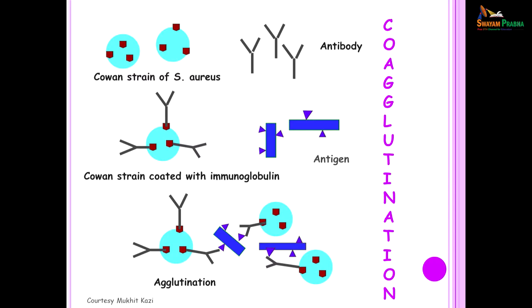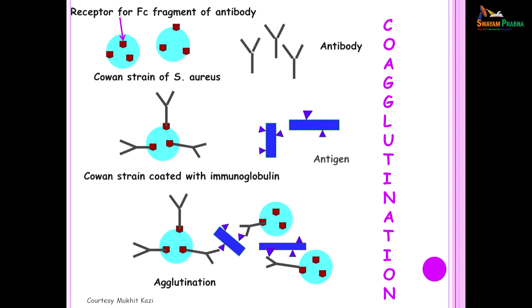Coagglutination is another form of reverse passive agglutination. Here we use the Cowan 1 strain of Staphylococcus aureus, which has a receptor for the Fc fragment of antibodies. When an antibody is mixed with the Cowan 1 strain, the Fc portion attaches to these receptors on staph aureus, and when a sample containing antigen is added, the staph aureus strains will agglutinate — hence this is called the coagglutination test.